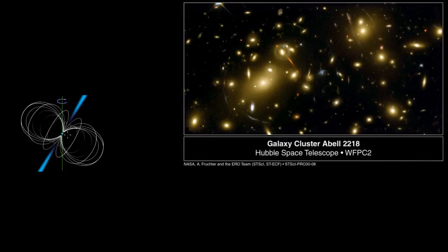In the last video we talked about how pulsars can be thought of as extremely stable clocks — that every time the pulsar spins around, a burst of radio waves is sent in our direction, and we can very accurately predict when each of these pulses will arrive at the Earth.